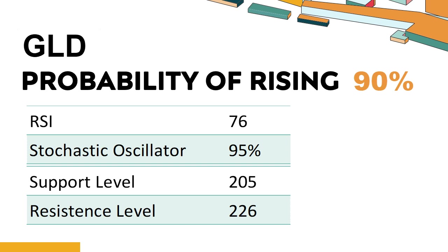GLD's short-term support level is 210. If it falls below 210 during the session, it will have a chance to test 205. GLD's short-term resistance level is 220. If it breaks through 220 during the session, it will look up to 226.